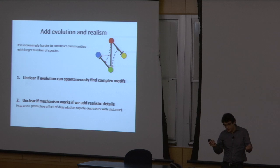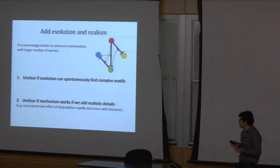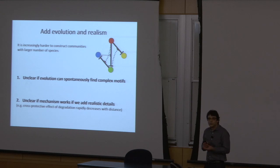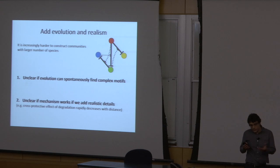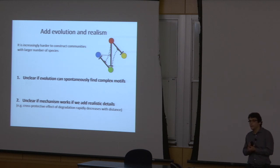We showed that by adjusting growth rates and interaction networks you can construct stable communities in silico, but what we really want to know is whether these communities can spontaneously emerge through evolution. We also wanted to see if, beyond the minimalistic model, the interplay between antibiotic production and degradation still works as a diversity-maintaining mechanism when more realistic details are added.